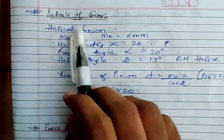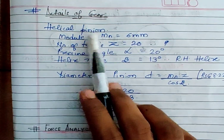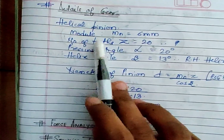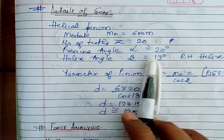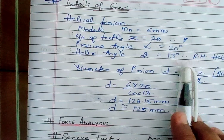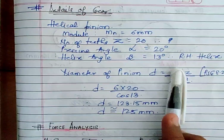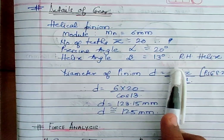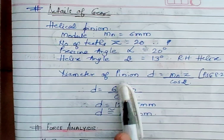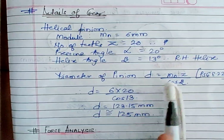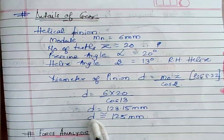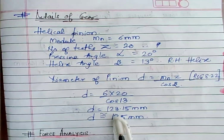Now let us look at the details of the helical gear mentioned in the problem. A helical pinion is mounted on the shaft being designed. The module is 6 mm, the number of teeth is 20, the pressure angle is 20 degrees, the helix angle is 13 degrees, and the hand of helix is right-hand. If not mentioned, you can assume right-hand or left-hand helix. The diameter of the helical pinion is calculated as module × number of teeth / cos β (reference: PHG 8.22), which gives a diameter of 125 mm.